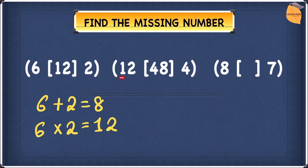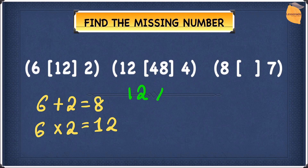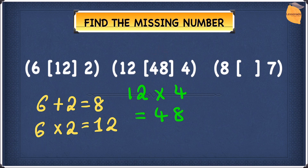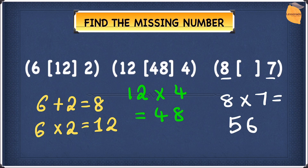Now let's see if this works for 12, 48, and 4. Multiplying 12 and 4: 12 times 4 is 48, and the number in the middle is 48 — yes, it is. So we can confirm that you multiply the two outside numbers to get the middle number. Now let's apply the same rule to the third pair: 8 times 7 is 56. So the number that goes in the middle for the third pair is 56.